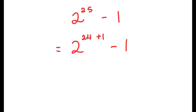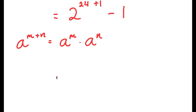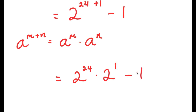The reason I'm rewriting 25 as 24 plus 1 is so I can use the property a to the power of m plus n is equal to a to the power of m times a to the power of n. So 2 to the power of 24 plus 1 is going to equal 2 to the power of 24 times 2 to the power of 1, minus 1.